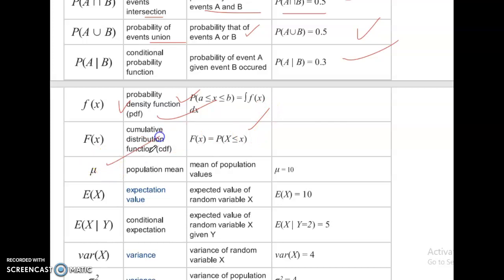Mu, population mean. Mean of population values, mu equal to 10. E of X, expectation value. Expected value of random variable X. E of X equal to 10. E of X given Y, conditional expectation. Expected value of random variable X given Y.